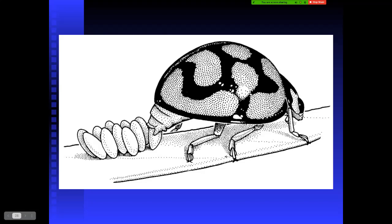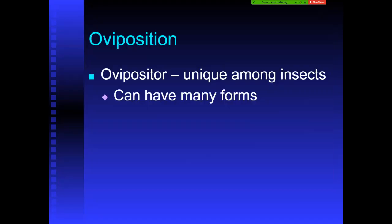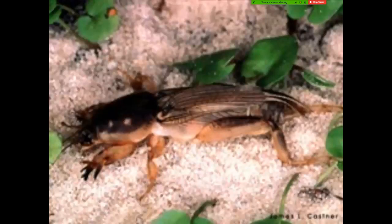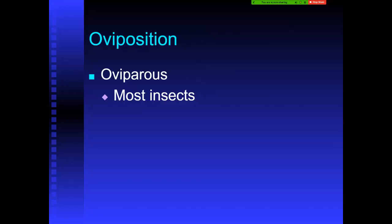The ovipositor is an egg-laying structure coming from the last abdominal segments, unique to insects and having many different forms. Here's an example of a wasp ovipositor laying eggs into the cuticle of a plant — these often lead to galls. Here's another example, believed to be a Jerusalem cricket, with a long ovipositor at its back end.